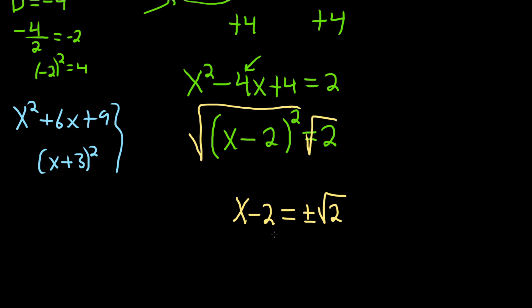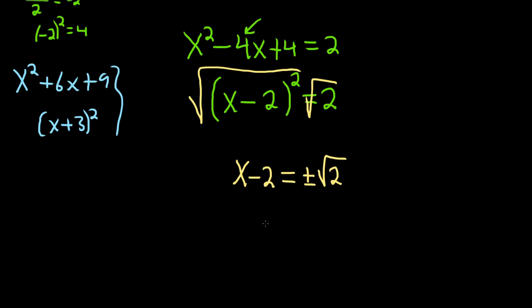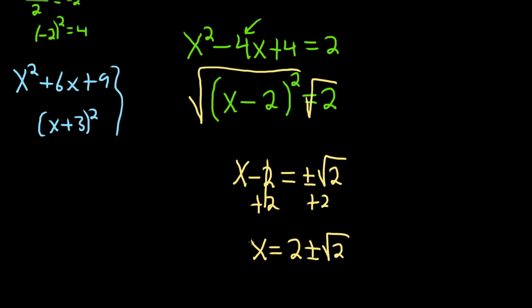The very last step is just to add 2 to both sides — plus 2, plus 2. So we end up with x equals 2 plus or minus the square root of 2. That should be the final answer. I hope this video has been helpful.